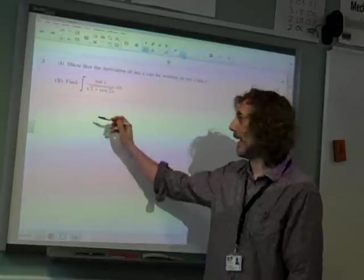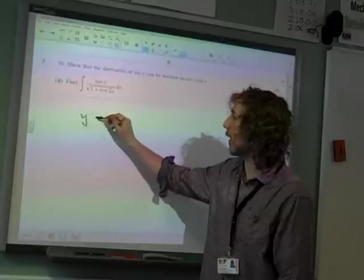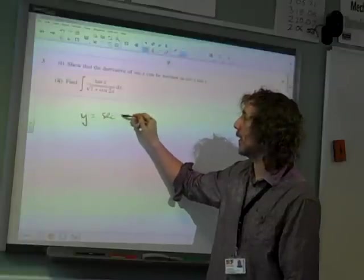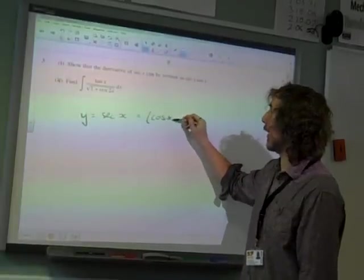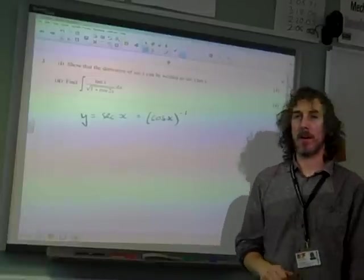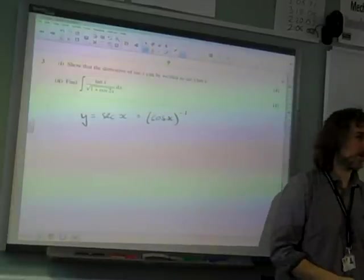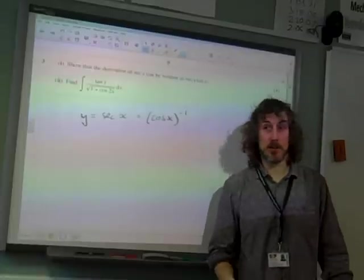We've done this lots of times, haven't we? Sec is... let's start by writing y for sec x. And sec x is cos x all to the power of minus 1, isn't it? It's 1 over cos x.